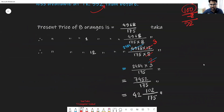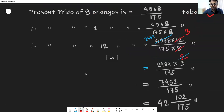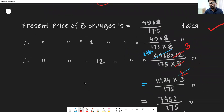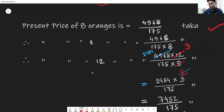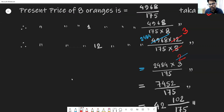So we can write: present price of eight oranges equals that calculated Taka amount. Therefore, present price of one orange equals that amount divided by 8. Since one dozen means 12 items, present price of 12 oranges equals the amount multiplied by 12 over 8. Doing the simple calculation: 12 divided by 4 gives 3, and 8 divided by 4 gives 2. Then 4,968 divided by 2 gives 2,484.